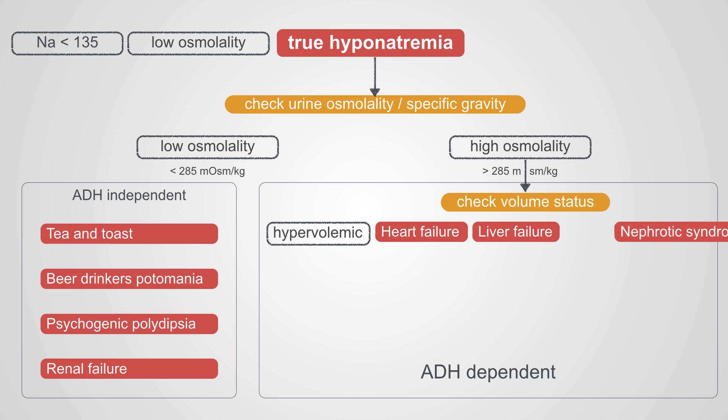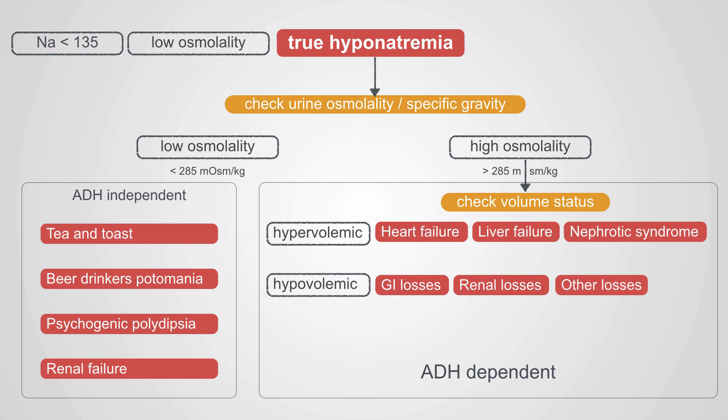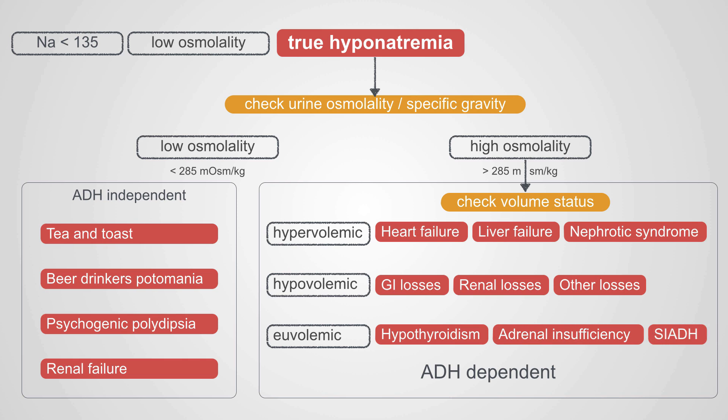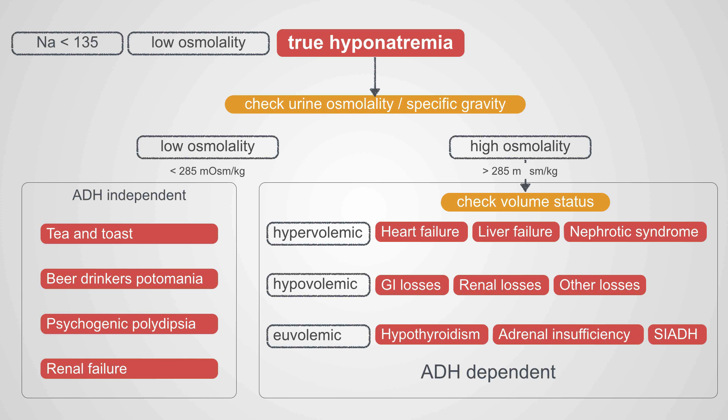We have hypervolemic patients with heart failure, cirrhosis, and nephrotic syndrome; hypovolemic patients with GI losses, renal losses, and other losses; and euvolemic patients with hypothyroidism, adrenal insufficiency, and SIADH. However, this is somewhat a fiction — even experts cannot make an accurate clinical assessment of volume status in more than 50% of cases. It's essentially a coin toss, so we rely on a more biochemical assessment using urine sodium and serum uric acid.